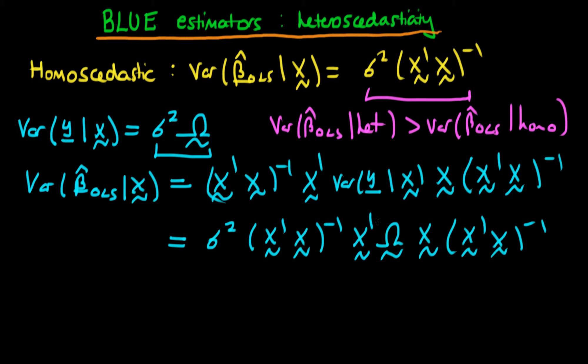That's why it's important to correct for the presence of heteroscedasticity. Essentially what software programs do is they estimate the omega, which then allows them to come up with an estimate of the variance of your beta hat OLS. You can then use that for inference. But if you do not correct for heteroscedasticity, the inference you'll be doing will be wrong.